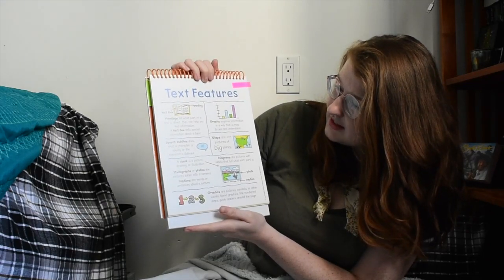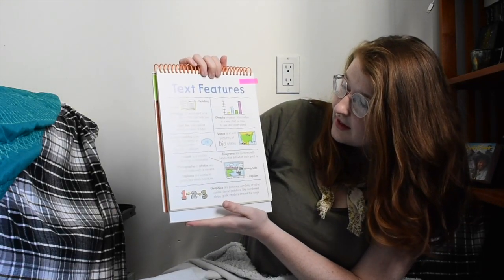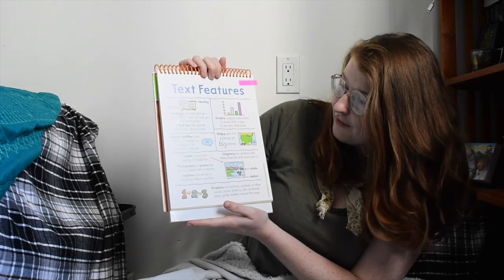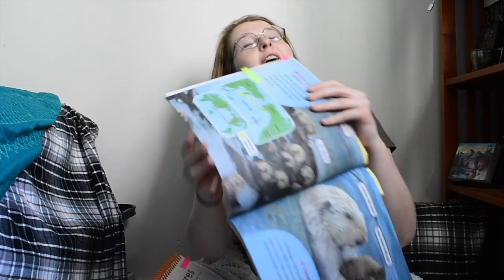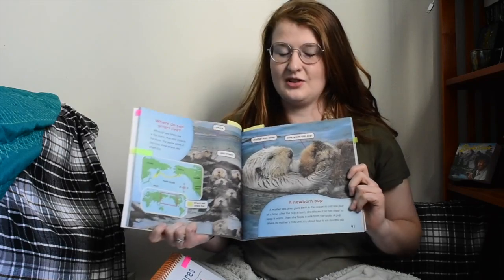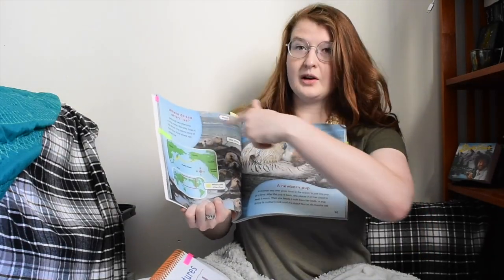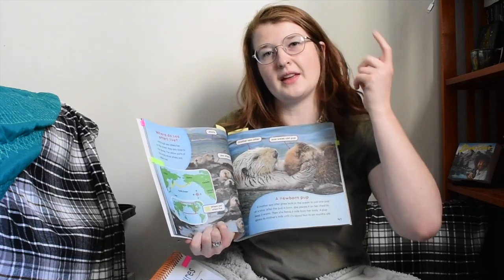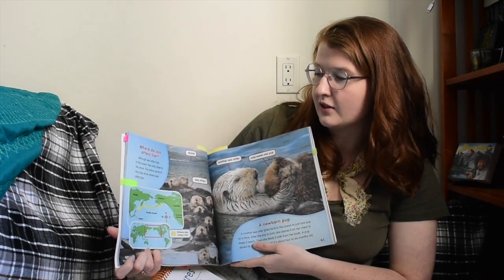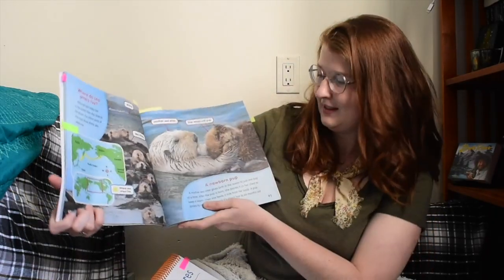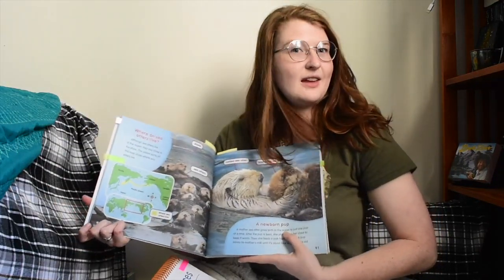Headings tell what part of a text is about. They can help you find information, and a fact box tells special information about that topic. I'm not sure about a fact box on this page, but I sure do see two headings. They're the large purple words above each little section. So if you're looking for information quickly, maybe for a research paper, you can find it. 'Where do sea otters live?' will probably tell you where they live. 'A newborn pup?' will probably tell you about pups. So those are headings.